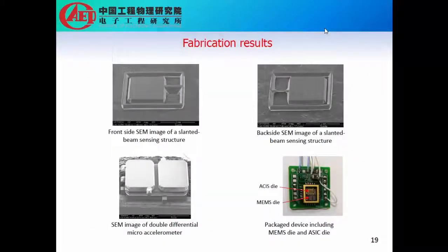Here we show the fabrication results. This is the front-side SEM image and the back-side SEM image of a slanted beam sensing structure. Then we show SEM images of the double differential micro accelerometer. We have packaged the device including the MEMS die and ASIC die.